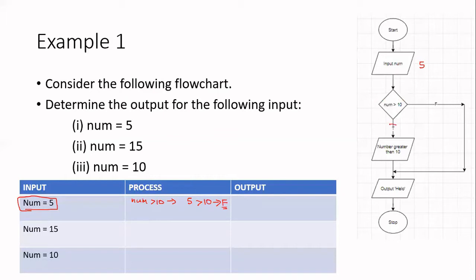I've got two branches — true and false. Because my condition evaluates to false, I follow the branch that says false, and that brings me to this point here. I then continue following the flowchart, and from there I go to output: hello. So my output is going to be the message hello. When the number was 5, this flowchart just displayed — it printed — hello.